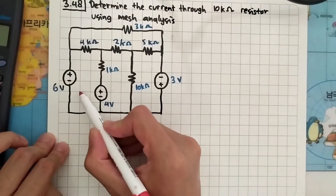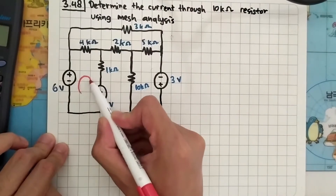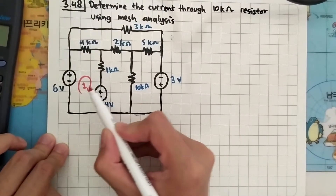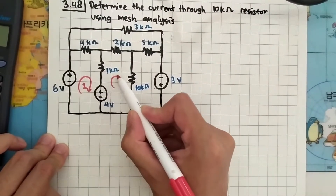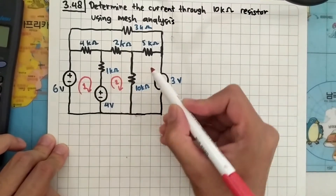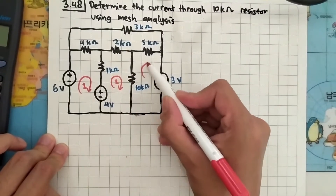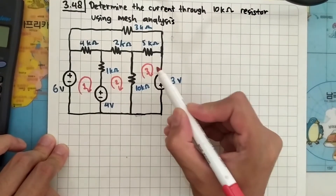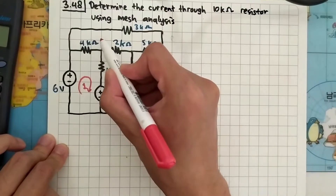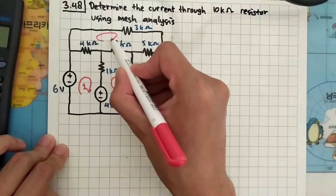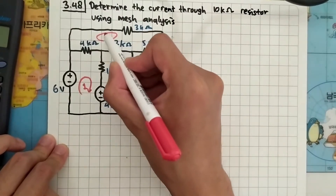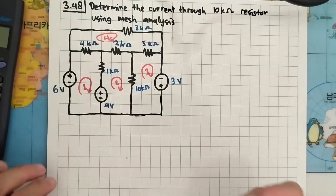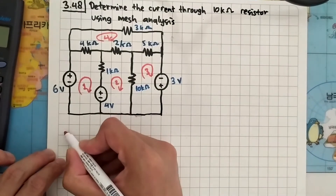Let's draw the loops here. Let's name this loop 1, this one here is loop 2, this one here is loop 3, and the last one here is loop 4. Let's start at loop 1.